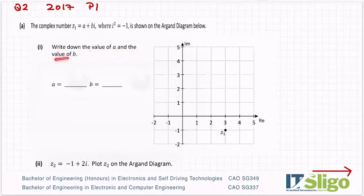Write down the value of a and the value of b. Okay, so a is the real part, b is the imaginary part, and I know that because b sits in front of i. So i denotes the imaginary part.